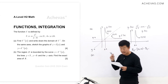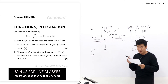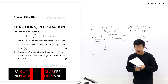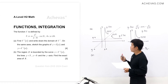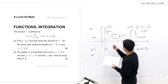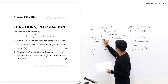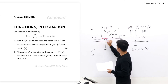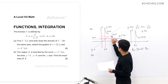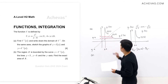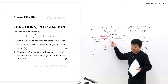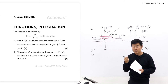Now for Part B, we look at region R, bounded by y = f⁻¹(x), the lines y = 5, y = 8, and the y-axis. We need to recognize this region on the graph first. With y = 5 and y = 8 as horizontal bounds, the region R corresponds to a strip along the curve.